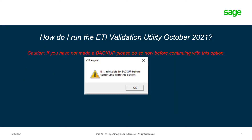Caution: if you have not made a backup, please do so now before continuing with this option. Once you select ETI Validation Utility, a message will appear advising you to back up. Please click OK, and if you did not create a backup as yet, please do so before continuing.